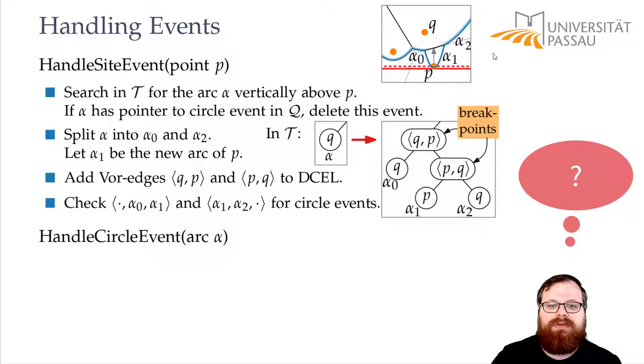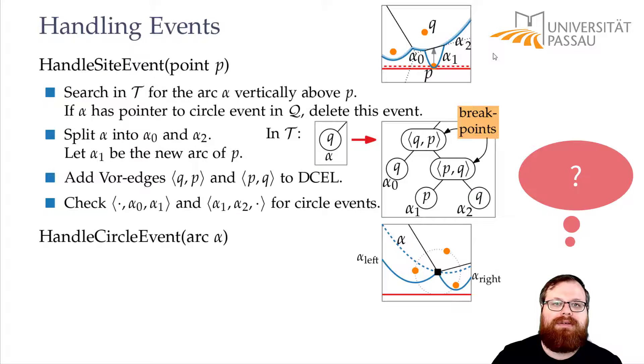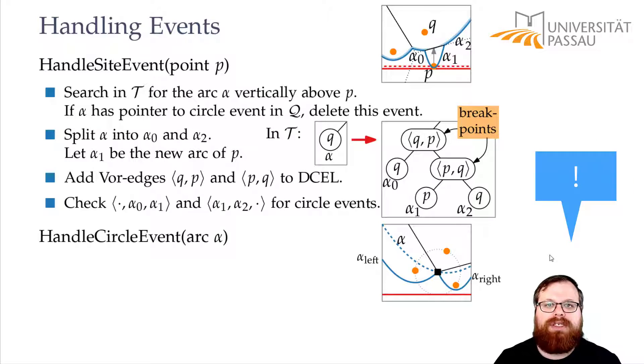Now about the circle event. What do we have to do here? Well, a circle event is just defined by an arc. It is the point that has on its largest circle three sites that have three consecutive arcs. And then the middle arc will disappear after that point. We will get this Voronoi vertex and this arc is afterwards gone.